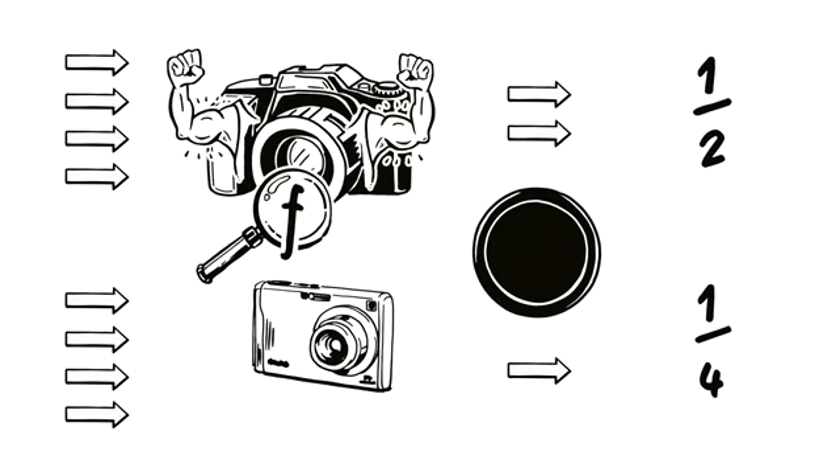The F number, or focal ratio, specifies up to how far the curtains can be opened. At F2, only half way. At F4, only a quarter of the way. So, the lower the number, the more light can pass through a particular lens.